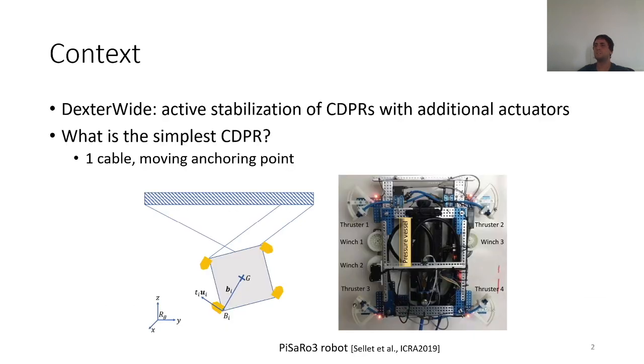When I began my thesis, it was the end of the Dexaroid project. The Dexaroid project was on cable driven parallel robots and people in my team were especially interested in active stabilization techniques of these robots involving additional actuators on the moving platform. Here you can see the PCR-3 robot. It's a planar CDPR which has four additional cold gas thrusters in order to do active damping of the robot.